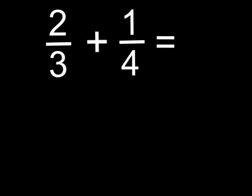Let's take a look at this problem: 2 thirds plus 1 fourth. Do these fractions have common denominators? They do not — 3 and 4 are not the same, so they are not common denominators. We must find a common denominator before we can add these fractions. Remember, the easiest way to find a common denominator is to multiply the two numbers together. So we will multiply 3 times 4 and 4 times 3.